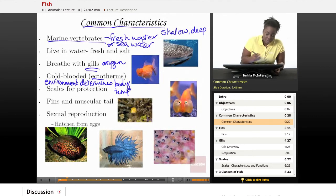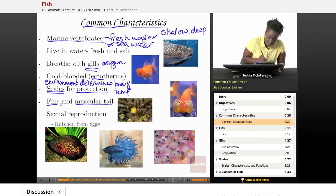Fish also have something called scales, and scales are the outside hard structure that is used for protection from their predators. Fish have what we call fins and a muscular tail, and these two structures help the fish to swim.